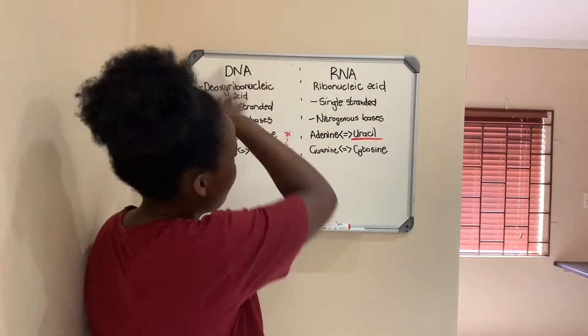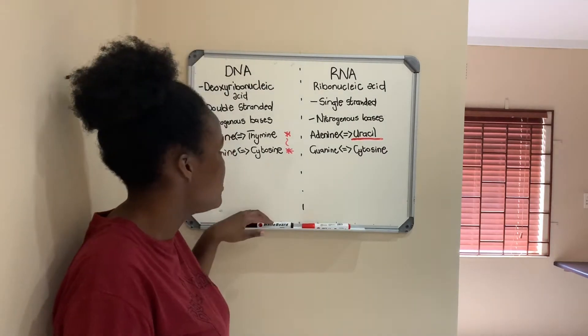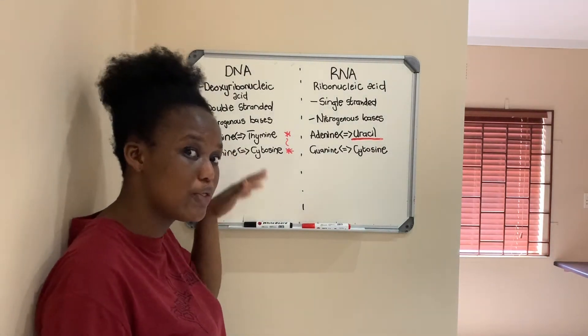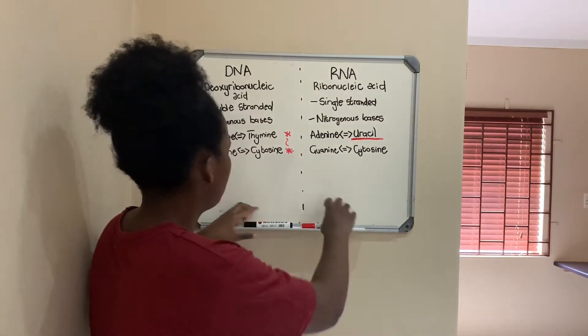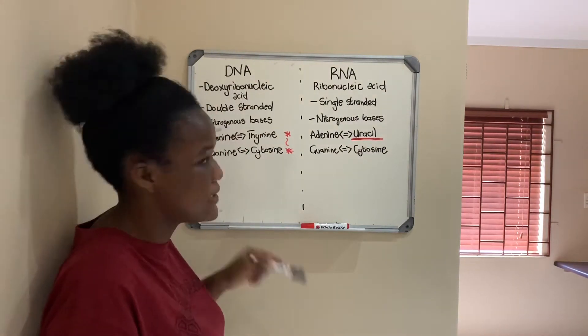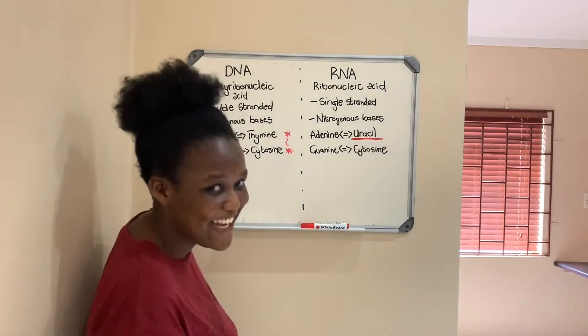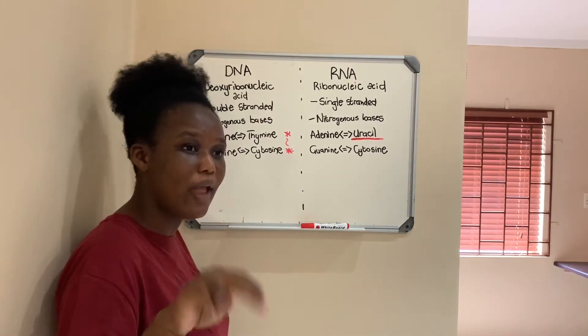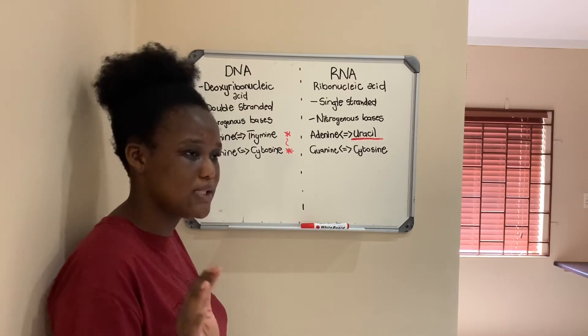Today we're going to be doing Grade 12 Life Science, focusing on DNA and RNA. I personally love that topic and I hope you do too. Most of you should already know this if you've gone through the topic, so I'll go over it quickly. DNA stands for deoxyribonucleic acid. It's double-stranded, and the nitrogenous bases it has are adenine, thymine, guanine, and cytosine.